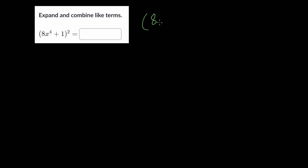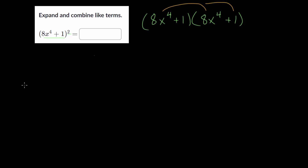Let's do one more problem. For this one we'll use the distribution method, and I encourage you to check this problem on your own using the formula. So let's rewrite 8x to the fourth plus 1 — we need to rewrite it twice since we are squaring it. So we have 8x to the fourth plus 1 times 8x to the fourth plus 1.